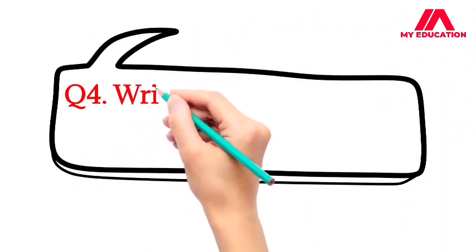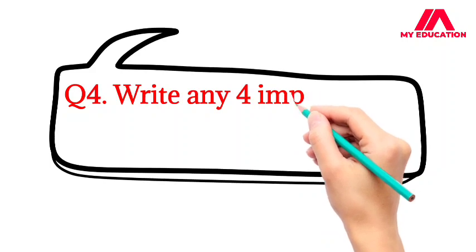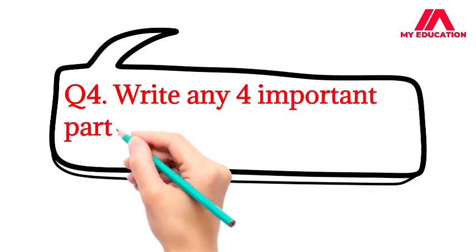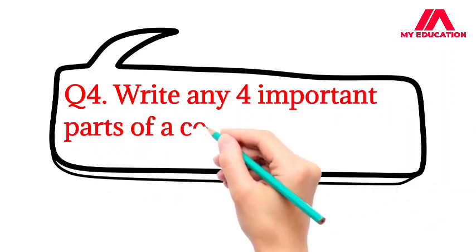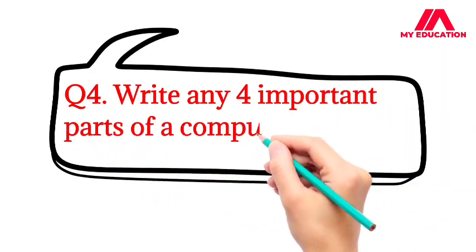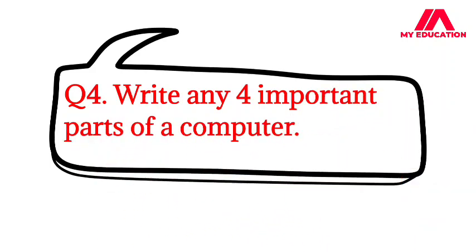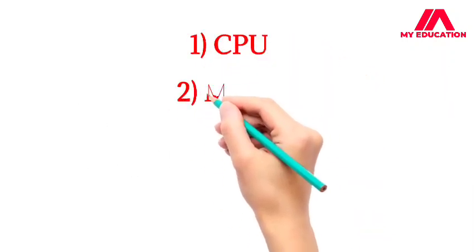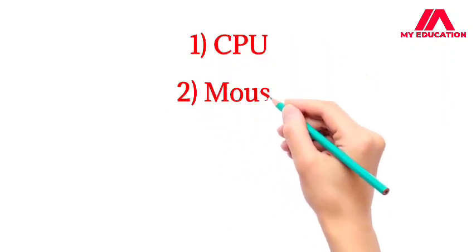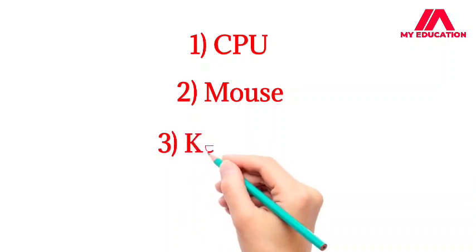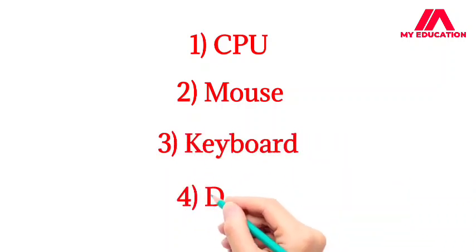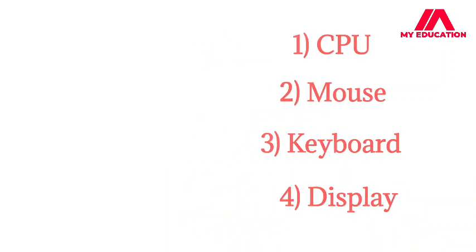Question 4: Write any 4 important parts of a computer. CPU, mouse, keyboard, and display.